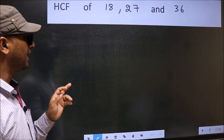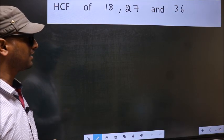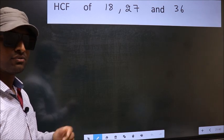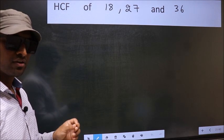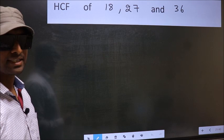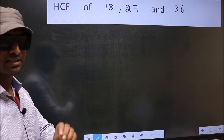HCF of 18, 27 and 36. To find the HCF, we should do the prime factorization of each number separately.